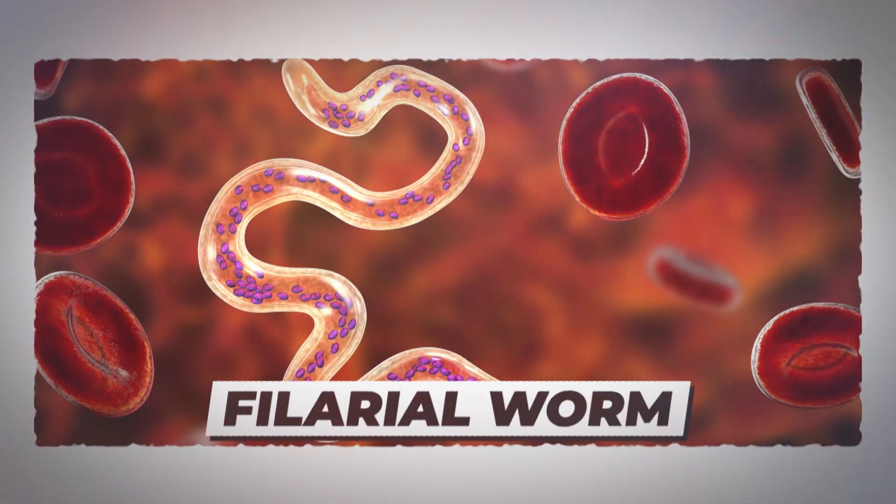Number 9, Filarial worm. Filarial worms are tiny roundworms that live in lymphatic and subcutaneous tissue, just below the skin. Several species can cause lymphatic filariasis, a disease seen in many parts of the world.